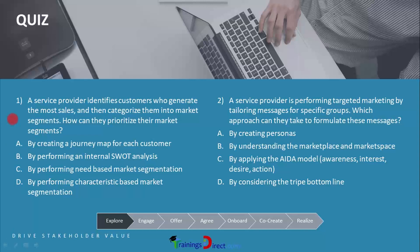The question is about prioritizing the segments, not about segmenting itself. Therefore we can rule out C and D, because C and D are about creating the segments first, which is not required here. So it has to be between A and B. How can prioritization of the segments be done — is it through a journey map or a SWOT analysis? The journey map doesn't help to prioritize; it is just the overall journey of a customer.